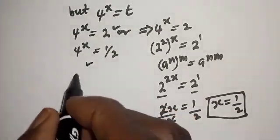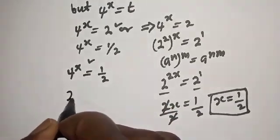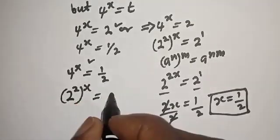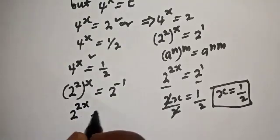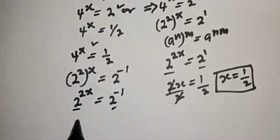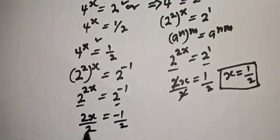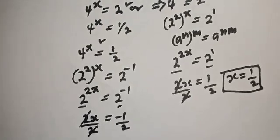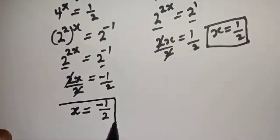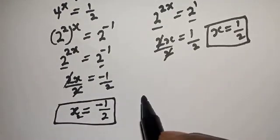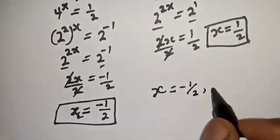From the second case, 4 raised to power x equals 1 over 2, which gives 2 raised to power 2x equals 2 raised to power minus 1. Since the bases are the same, 2x equals minus 1, and dividing by 2, x is equal to minus 1 over 2. This is the second value of x. Therefore our final answers are x equals 1 over 2 and x equals minus 1 over 2.